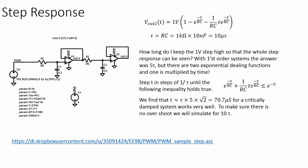So let's do the step response. Here's our theory and tau in this case would be RC which should be 10 microseconds. But how long do I keep this one volt step high or how long will I let the simulation run for before I stop it? In first order systems you could always say 5 tau. But here we have two exponentials and one of those exponentials is multiplied by time. So as this is getting smaller the T part is getting bigger.